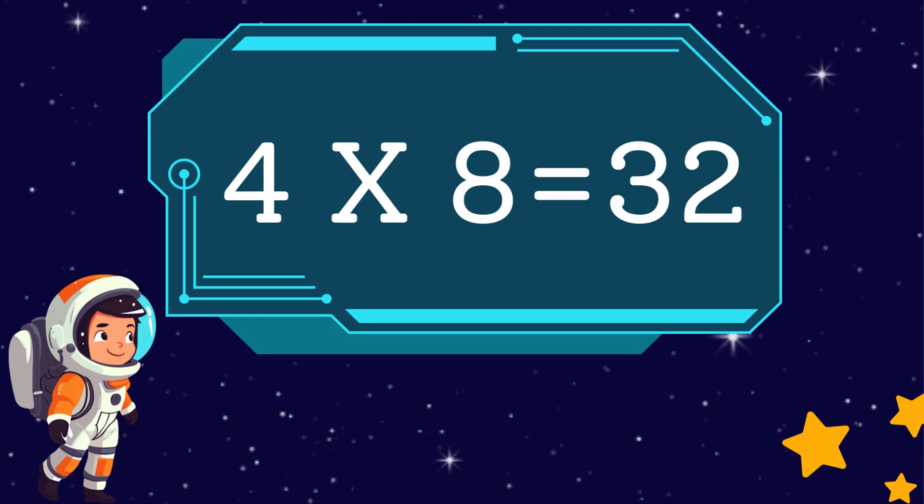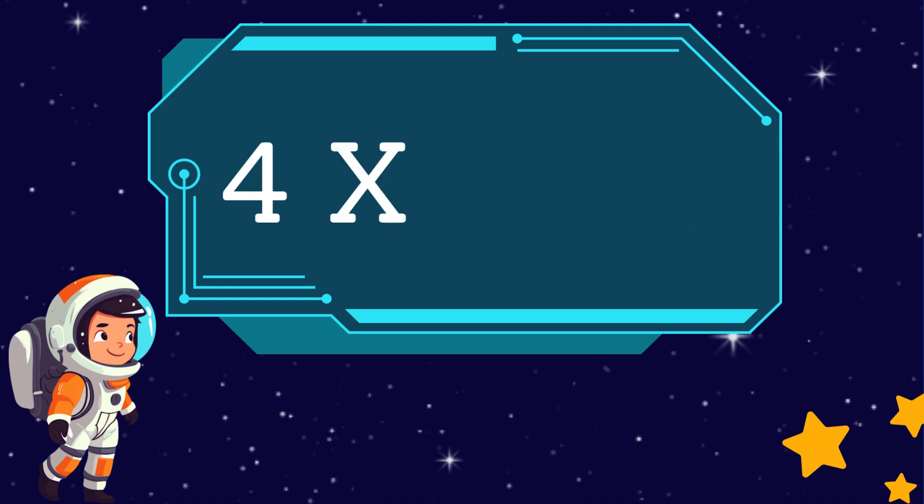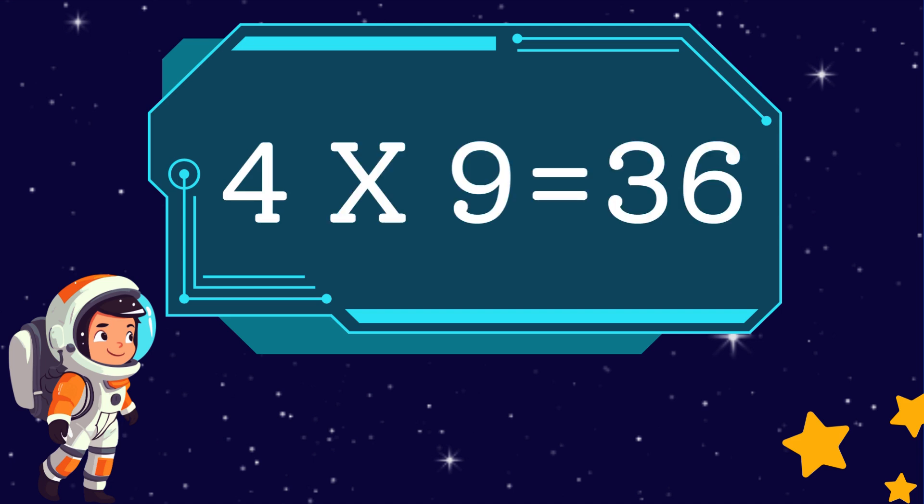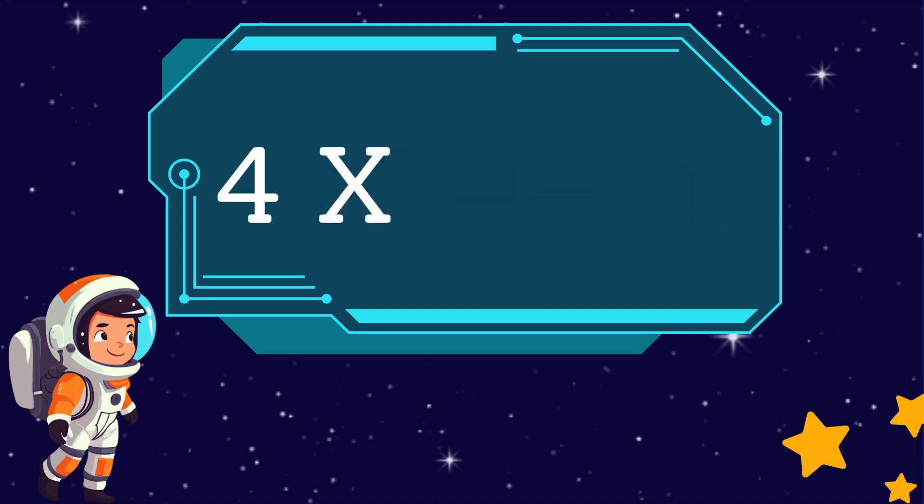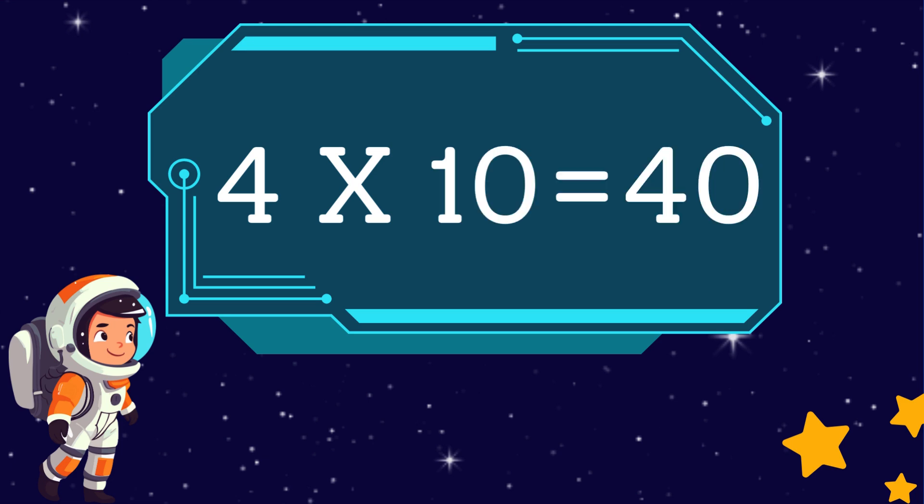Four eights are thirty-two. Four nines are thirty-six. Four tens are forty.